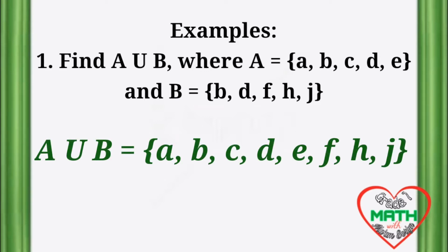The answer is A union B equals the elements {A, B, C, D, E, F, H, J}. As you can see, all the elements in A union B are the combined elements of set A and set B.